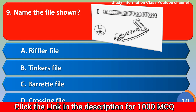Next question: name the file shown. Option A) riffler file, B) tickler file, C) bad file, D) crossing file. The correct answer is option B, tickler file.